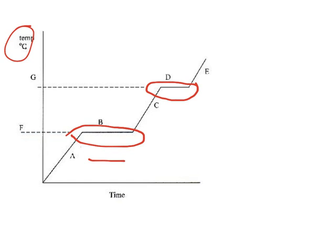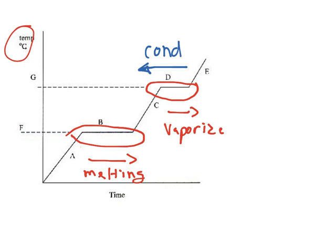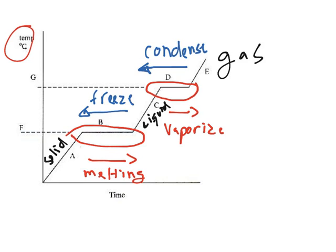Meaning that the state transition occurs there. If it's going this way, it's going to be melting, and if it's going this way, it's going to vaporize. Now, if we look at it from the other side, it's going to condense here and freeze here. You can identify that this section is a solid, this section is a liquid, and this is a gas.